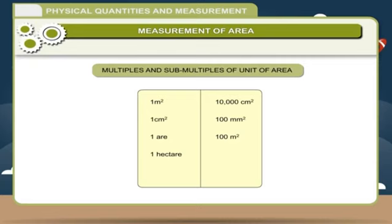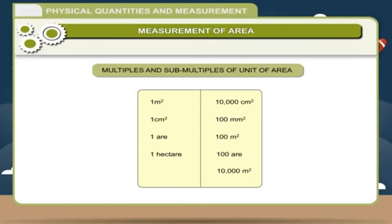One hectare is equal to 100 ares, which is equal to 10,000 square meters.